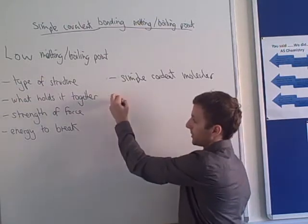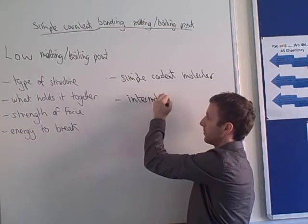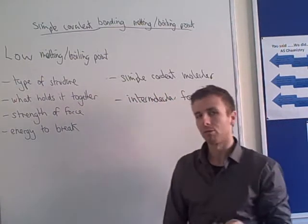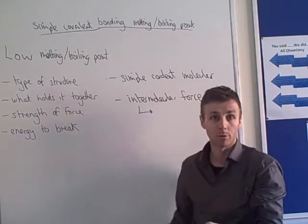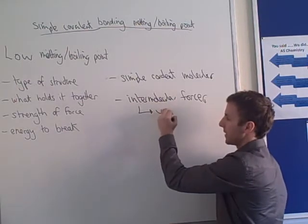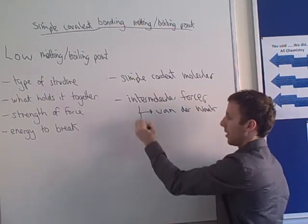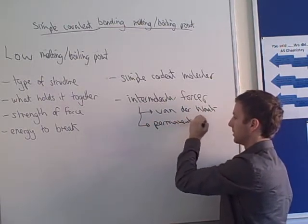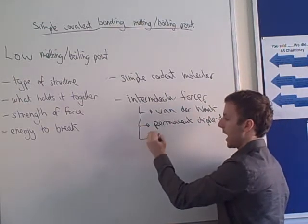So if we're going to think about why simple covalent molecules have a very low boiling and melting point, we need to be talking about the intermolecular forces. I can't help myself — I'm going to write down what the three intermolecular forces are, and you'd have to pick the correct one depending on what molecule you had. So we've got van der Waals forces, we've got permanent dipole-dipole forces, and we've got hydrogen bonds.